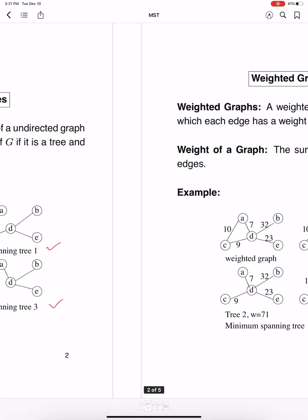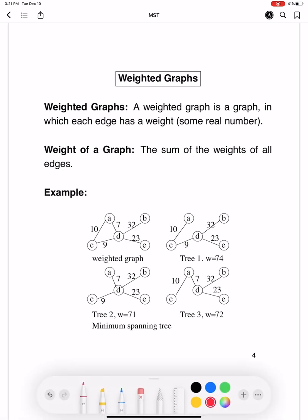Now let's consider a weighted graph. A weighted graph is a graph in which each edge has a weight, some real number. Now if you add up or sum all the weights of these edges, you will get the weight of the complete graph.